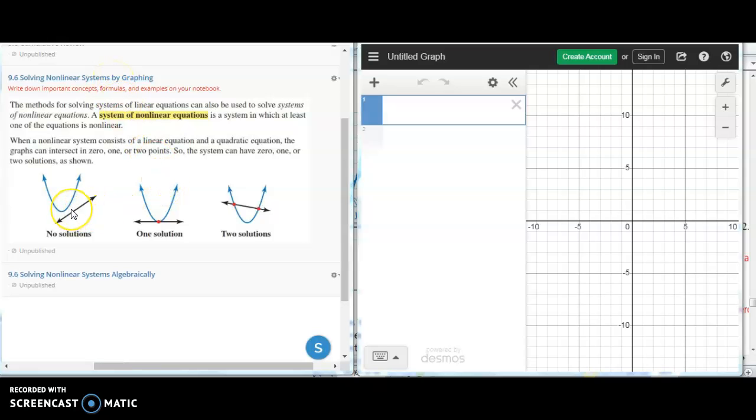So what is our goal in solving non-linear systems? Our goal is to figure out whether they have a solution or not. And by solution, we mean whether they intersect at a point like this that has one solution, or maybe they intersect at two different points, or they don't intersect at all.